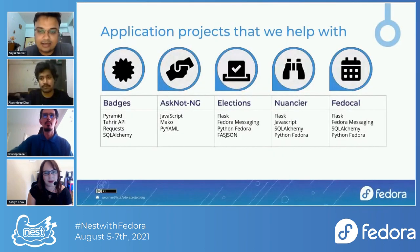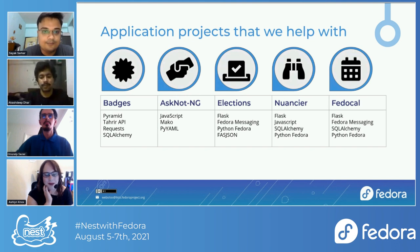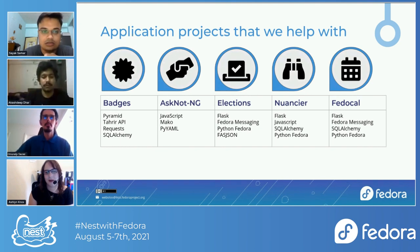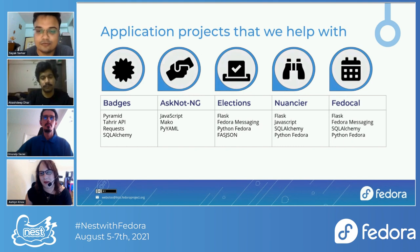The application projects that we help with range from Badges to FedoraCal — there are a lot of options. We need people to come join us, contribute, and help make this a success. Some of the applications we need help with maintaining and enhancing include Badges, Ask Fedora, Elections, Nuancier, FedoraCal, and more. Below them you can see the technologies used. You can check out their repositories at Pagure. It's pretty easy to get started on your first contribution, and we'd really appreciate new contributors because it takes a lot of time and effort to maintain all of this.